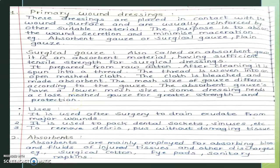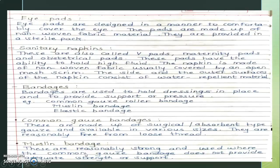The second classification is absorbents. Absorbents are mainly employed for absorbing blood and fluids from injured tissues and other discharges. Examples include surgical cotton, eye pads, and sanitary napkins. Eye pads are designed to comfortably cover the eye; they are made up of non-woven fabric materials and are provided in a sterile pack.